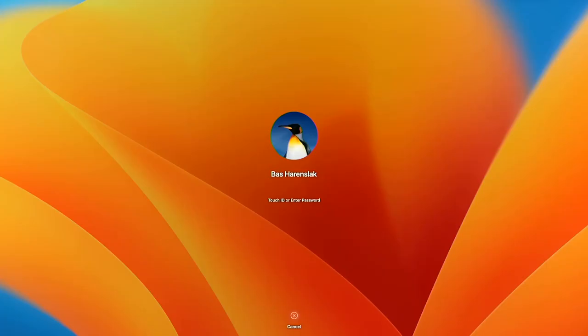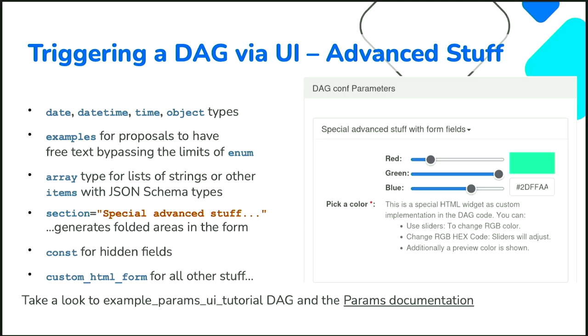There's also a custom HTML form feature, shown in the tutorial DAG shipped with the standard code, where instead of a backend-generated form you can inject arbitrary HTML as a form element. The example shown has three sliders to change color components that generate a color code which is then submitted. There are more details and examples in the params documentation and an example DAG tutorial — feel free to use it.